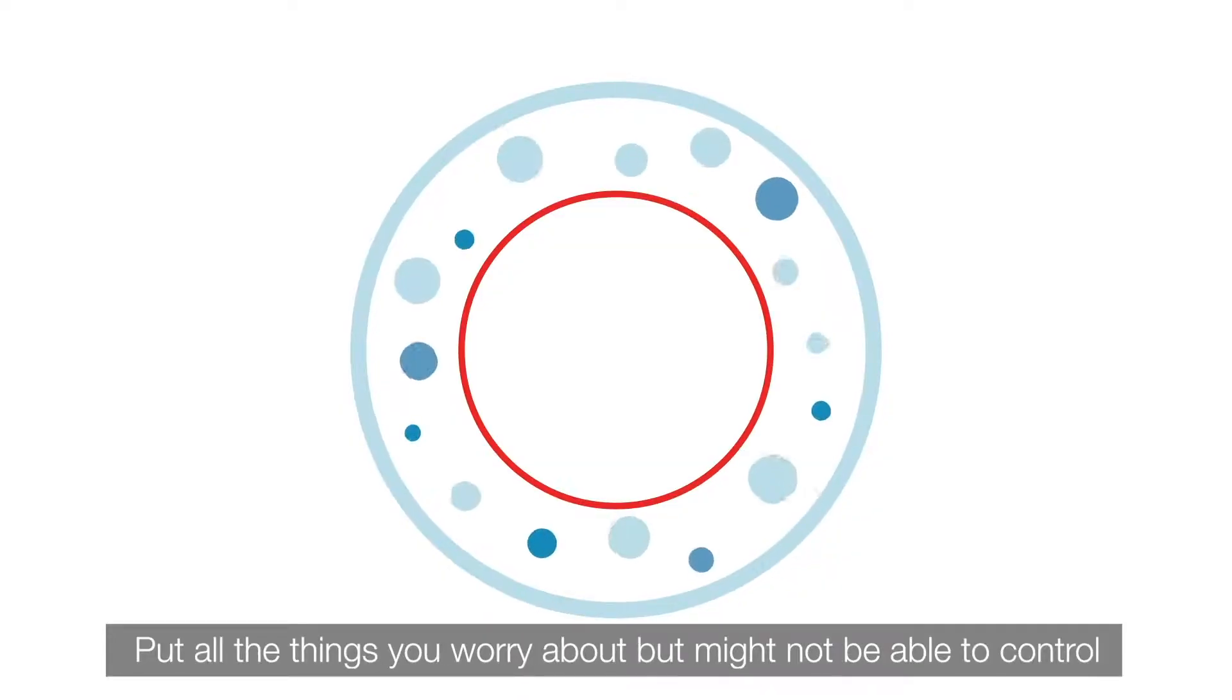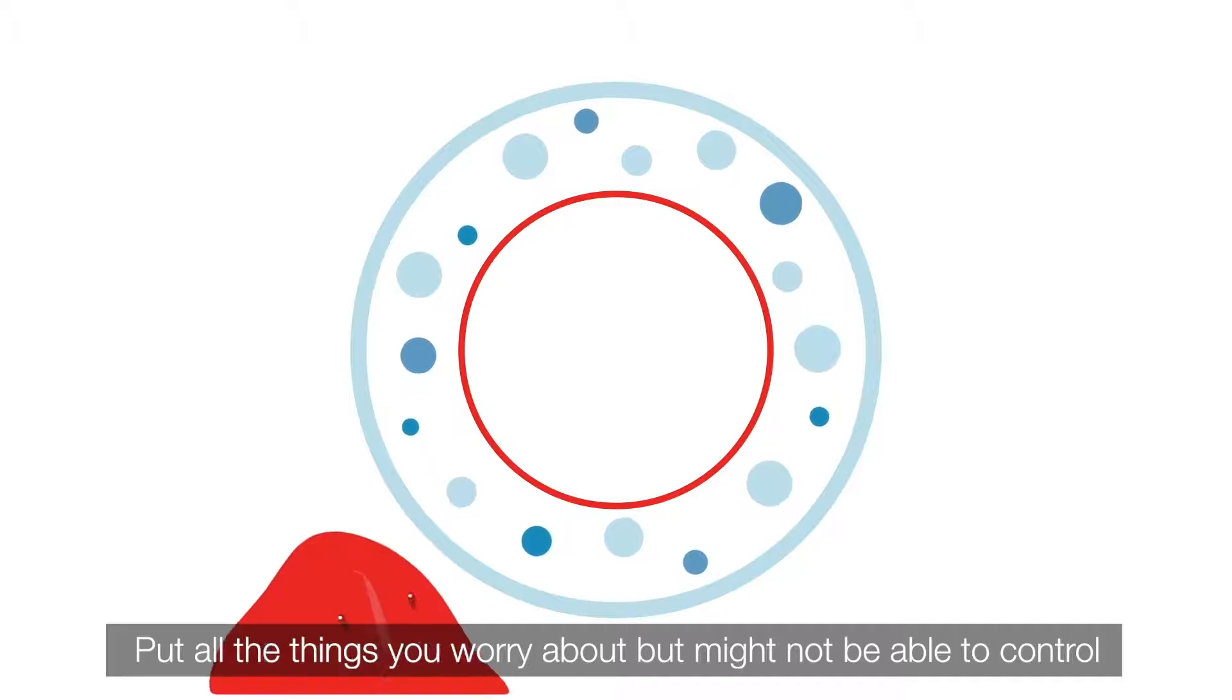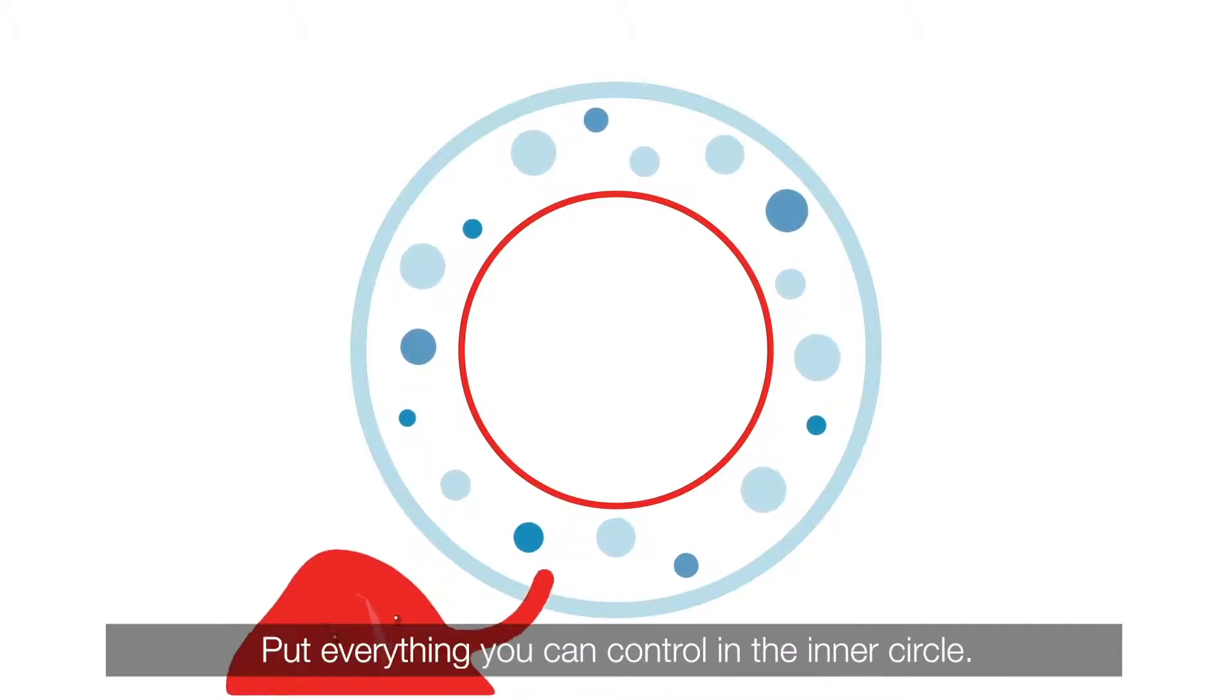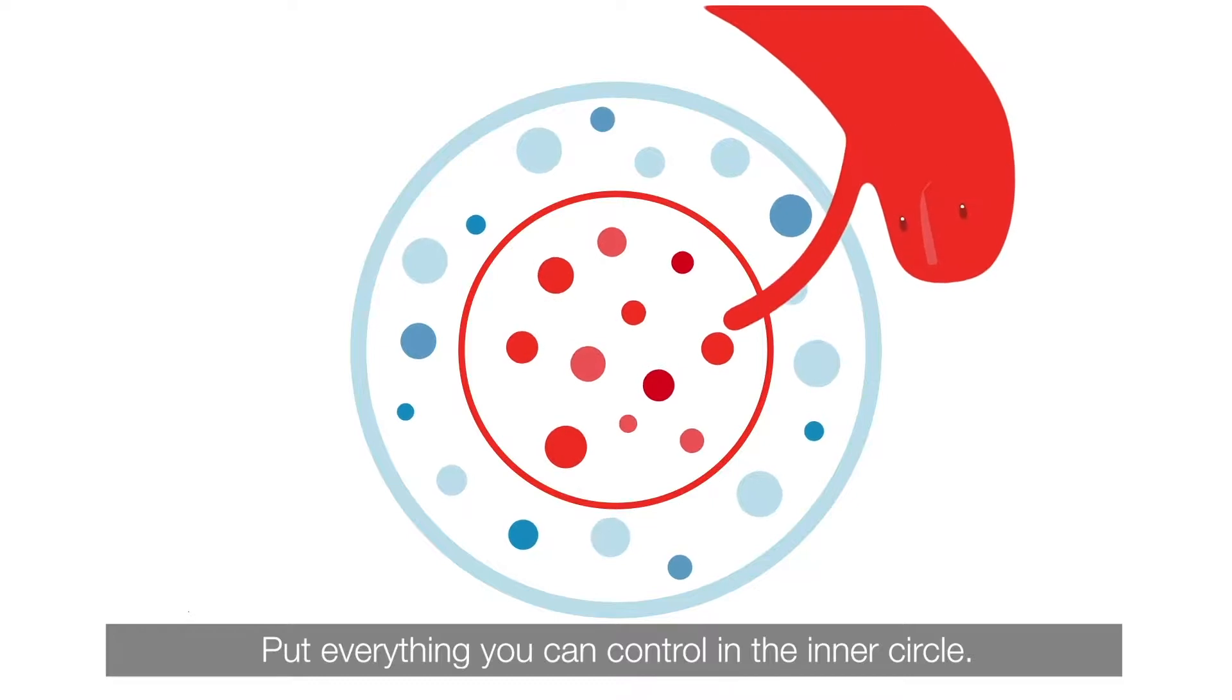Put all the things you worry about but might not be able to control in the outer circle. Put everything you can control in the inner circle.